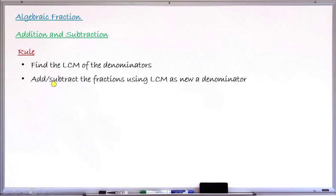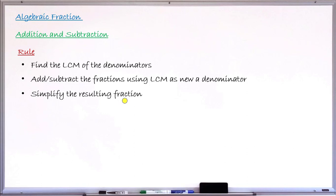The next step says: add if you are asked to add, or subtract if you are asked to subtract, using the LCM as the new denominator. Then finally, simplify the resulting fraction — after adding or subtracting, if you can simplify the resulting fraction further, you do so. This is what we need to do for addition and subtraction of two algebraic fractions successfully.